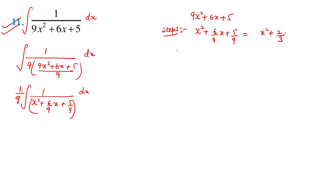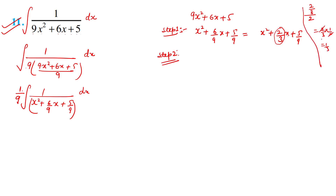So we have x² + (2/3)x + 5/9. We add (1/3)² and subtract (1/3)². The group x² + (2/3)x + (1/3)² becomes (x + 1/3)². The remaining terms are 5/9 - (1/3)² = 5/9 - 1/9 = 4/9. So the expression becomes (x + 1/3)² + 4/9, and 4/9 can be written as (2/3)².